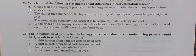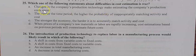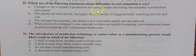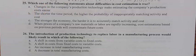Letter choice A says changes in the company's production technology make estimating the company's production costs easier. The reason this is not true is because any changes in technology — and usually when we have a change in technology, we're talking about a situation where technology has improved and is more efficient — the change itself, even if we were going the other direction, makes estimating production costs more difficult because there is a change.